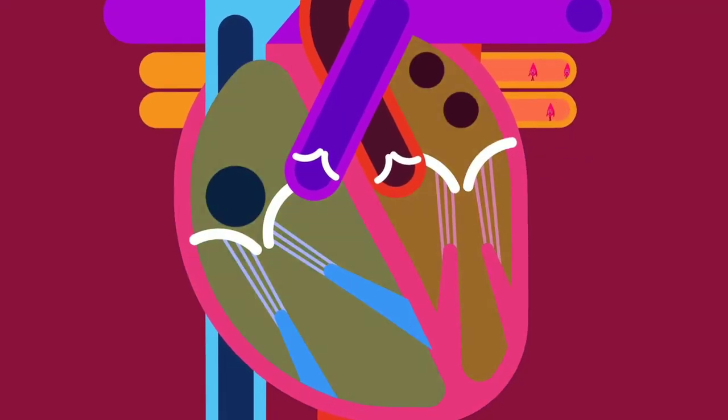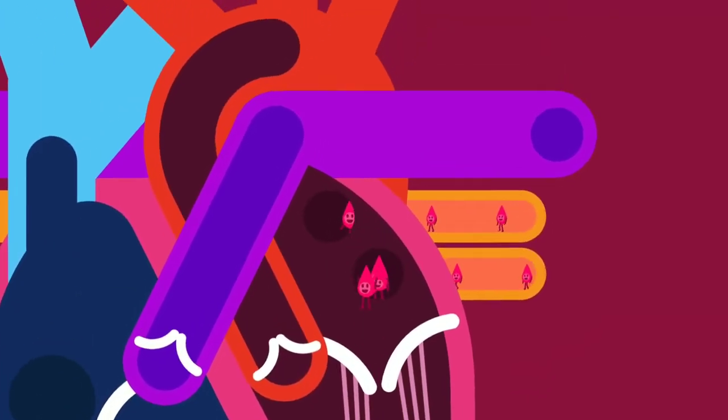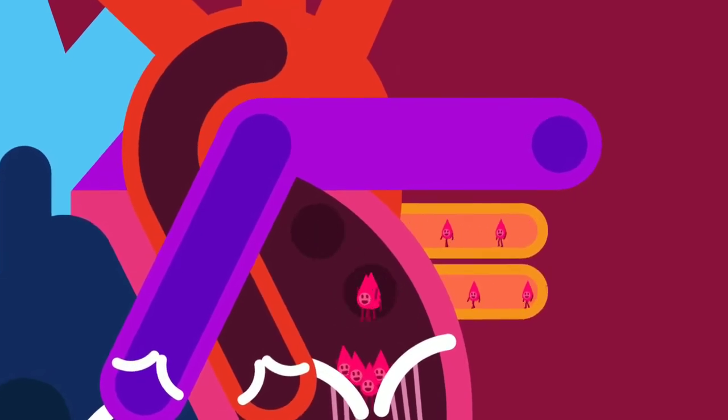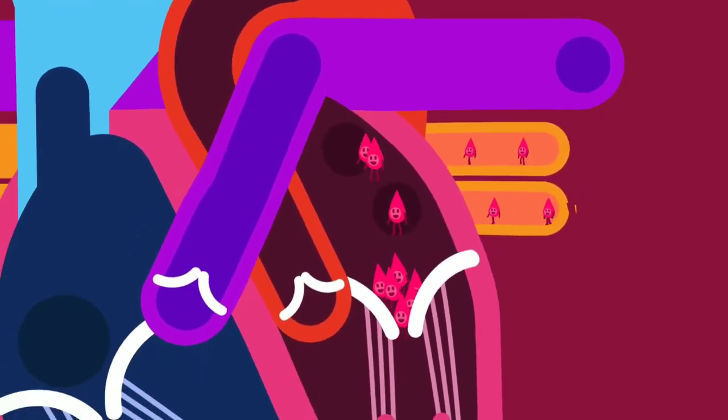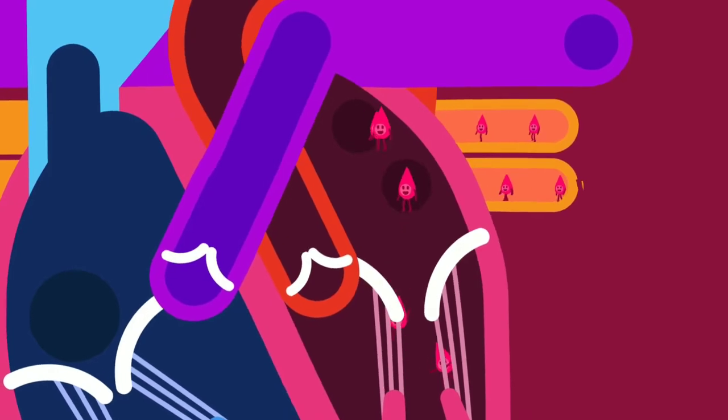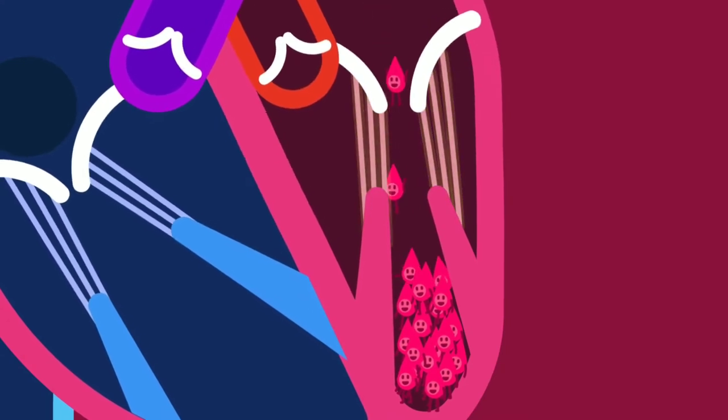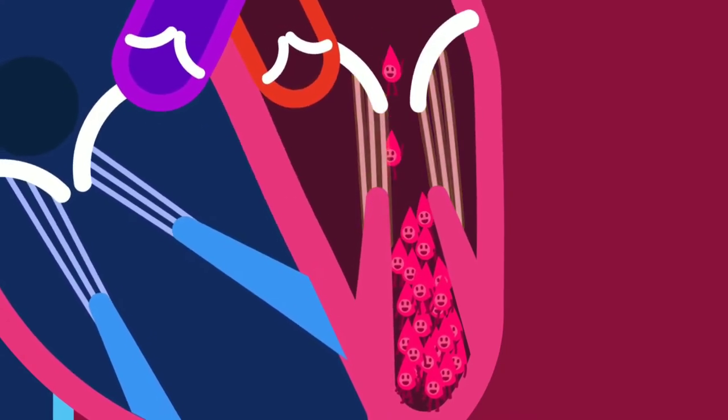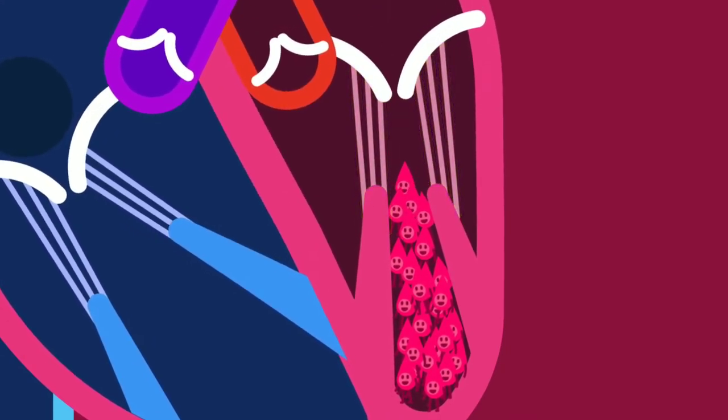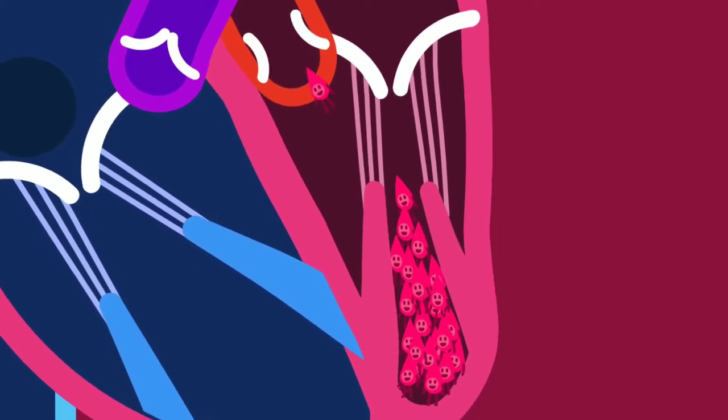Each side has an atrium and a ventricle. The left atrium receives oxygenated blood from the lungs via the pulmonary vein and pumps blood to the left ventricle. The mitral valve prevents backflow of blood to the left atrium. The chordae tendineae are tendons that tighten to prevent valves from flapping backwards. The left ventricle pumps oxygenated blood via the aorta to all parts of the body except the lungs.